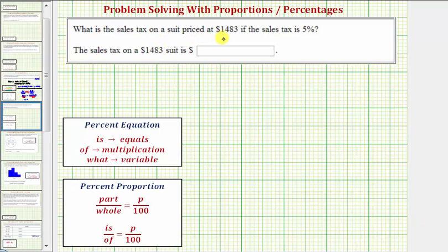What is the sales tax on a suit priced at $1,483 if the sales tax is five percent? So to find the sales tax we need to answer the question, what is five percent of $1,483?